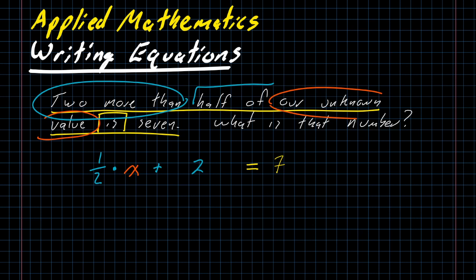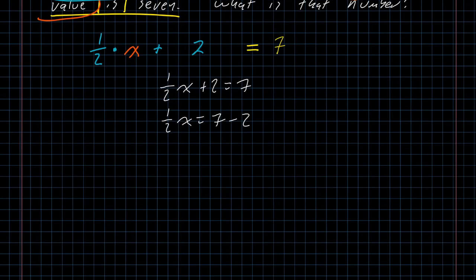That's an equation we can solve. I can subtract two from both sides of the equation. Then, to get x by itself, x is being multiplied by one-half. I need to divide by one-half. Dividing by one-half is the same thing as multiplying by two. So, I get that x is 10.